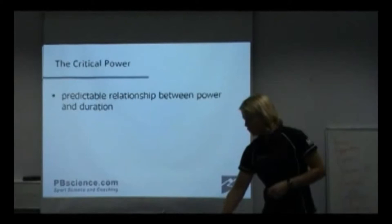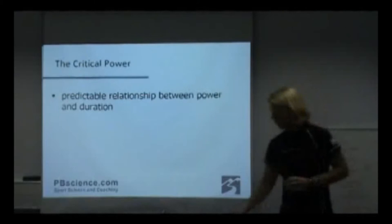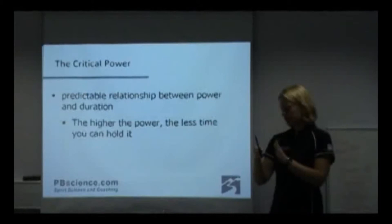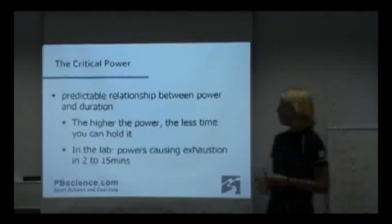Critical power is talking about the predictable relationship between the power output and the duration. The higher the power, the less time you can hold it; the lower the power, the longer you should be able to hold it. And that's what we'll be looking at today. What we do in the lab is take a series of trials that last from 2 to 15 minutes.